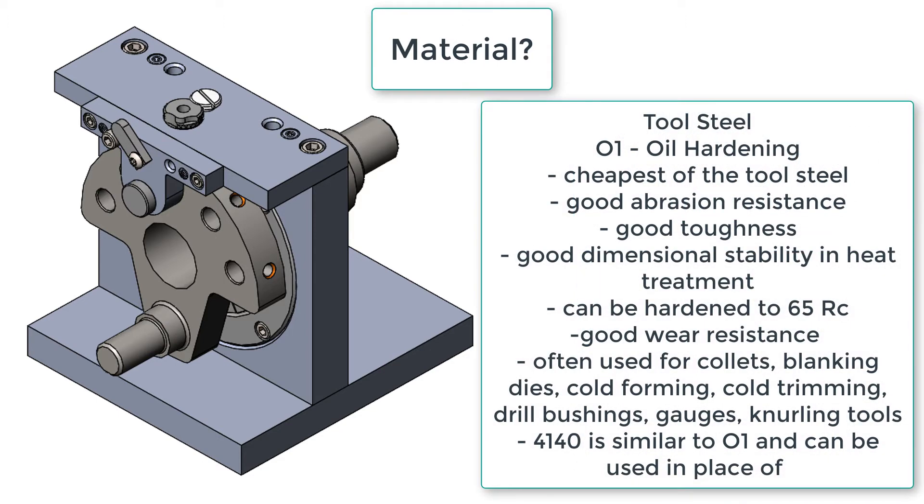The remaining parts of our jig will be made out of tool steels. The collet could be made out of a tool steel or a spring steel. When it comes to jigs and fixtures, O1 is the typical tool steel that is chosen.